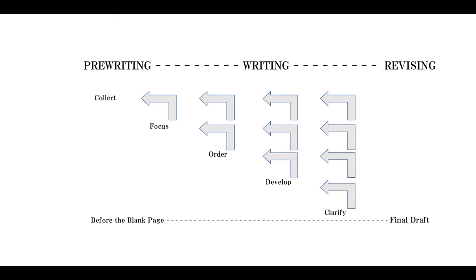Eventually we're closer to the revision part of the process — we're clarifying our meaning. But in clarifying our meaning, sometimes we need to push the order around: move this paragraph over there, that sentence down to there. So you see, it's not a linear pre-writing, writing, revising. You don't just check those lists off — you go backwards and forwards until finally you do get to your final draft.